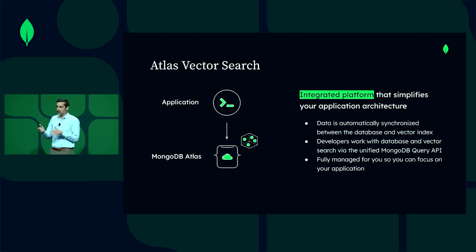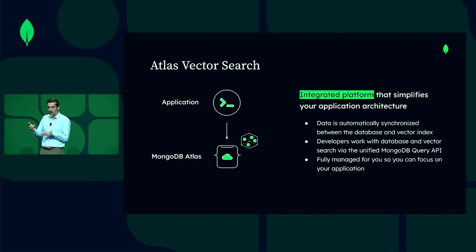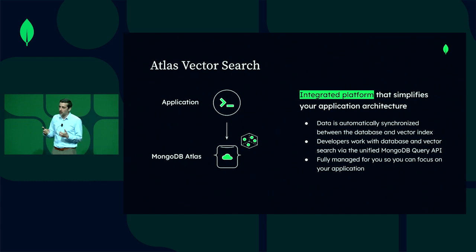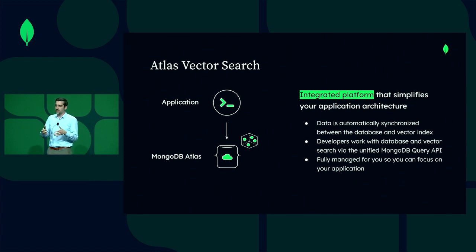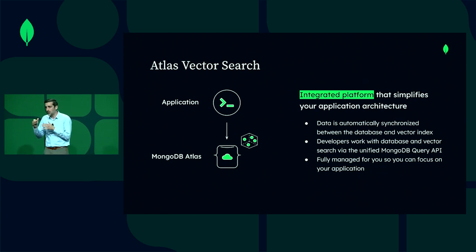For those of you familiar with competitive products doing vector search in the market, one thing you have to do is sync data back and forth from your operational store into your vector search capability — continually vectorize it, keep it aligned — and that's a tax. It takes a lot of time, can be brittle, and you have to maintain it. With Atlas Vector Search, data is automatically synchronized between the database where it's stored and the vector index that lives right alongside it. You get to work with your data both for operational workloads and semantic search workloads using a single MongoDB query API, with a fully managed offering so you can just focus on building the application.